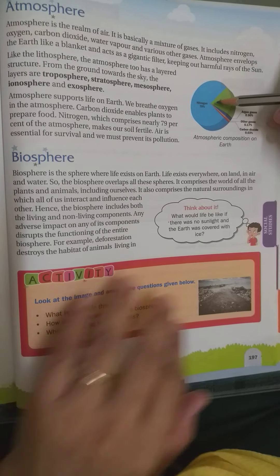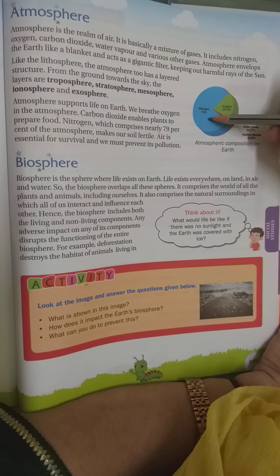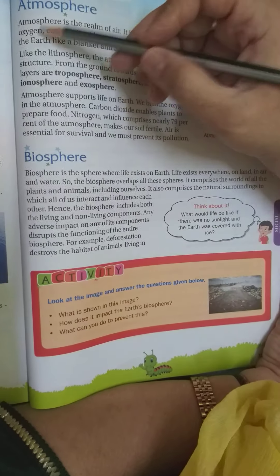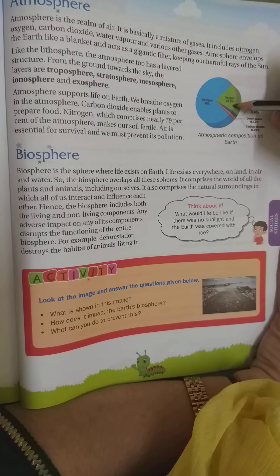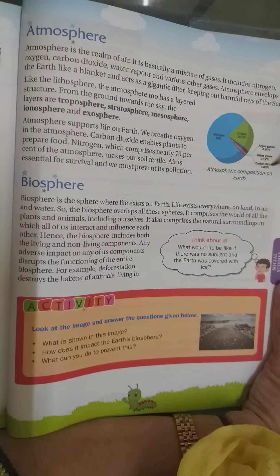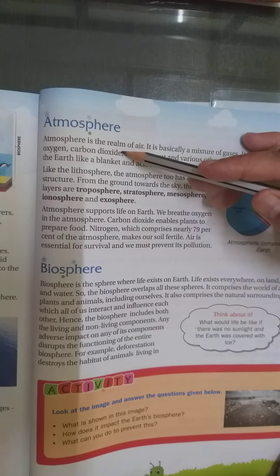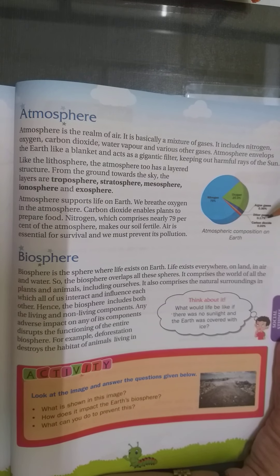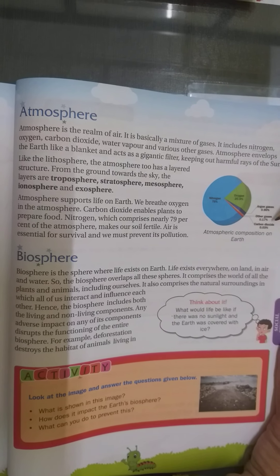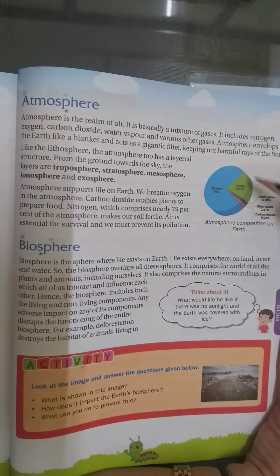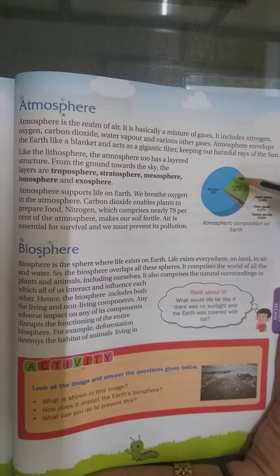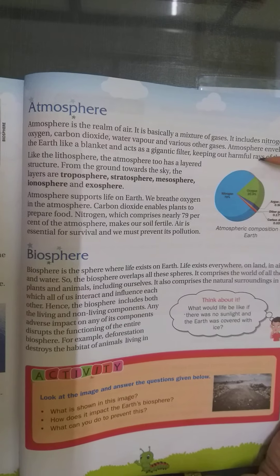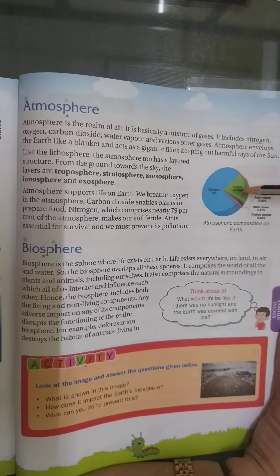How much nitrogen is there in the atmosphere? It is 78 percent. What about oxygen? Oxygen in the air is 20 percent. Then comes carbon dioxide, that is 0.03 percent. Water and other gases make up the remaining percentage. This is the total distribution of gases in the atmosphere, keeping harmful rays away from the sun.